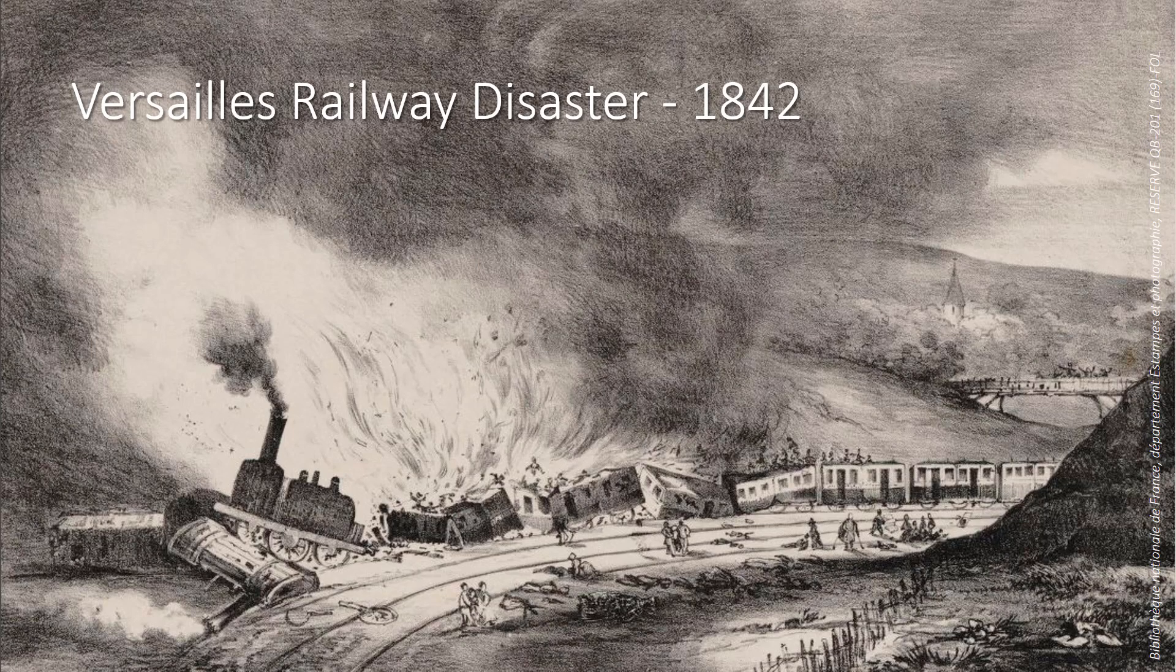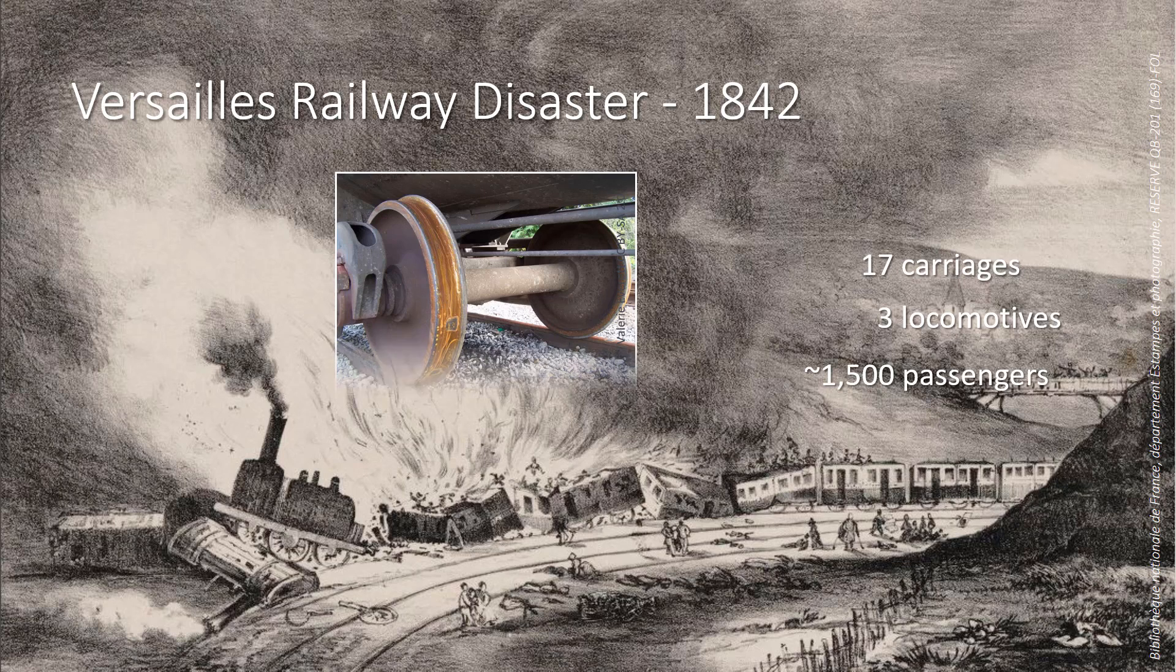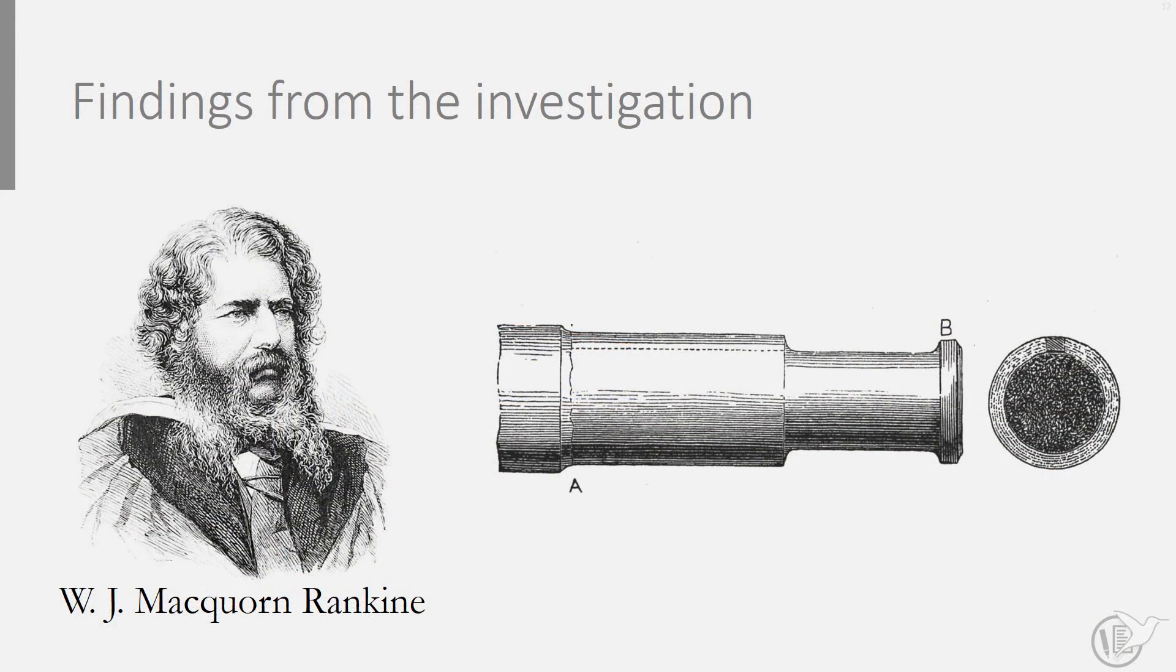Now what can we learn about stress concentration from practice? Let us go back to the time of 1842, when a train accident occurred near Versailles. This train with 17 carriages was pulled by three locomotives, transporting about 1500 passengers. The sequence of the accident was initiated by the front axle failure of the first locomotive. The second locomotive ran into the first, bursting the boiler which subsequently ignited the fire. After investigating the accident, Rankine concluded that fatigue in combination with stress concentration has led to the front axle failure.